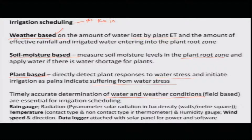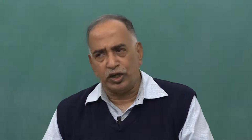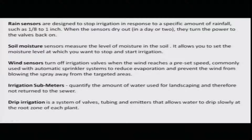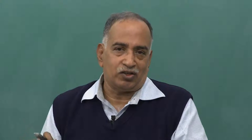Irrigation scheduling is based on water and weather conditions. For that purpose, we need rain gauges, temperature sensors, and data loggers which can be kept in a particular area and monitored for water requirements. Rain sensors tell you how much rainfall has fallen. Soil moisture probes should be in the root zone. Wind sensors tell you about wind speed and water loss. Irrigation submitters quantify water used. Drip irrigation systems use tubes and emitters to control water delivery so water is not lost during irrigation.